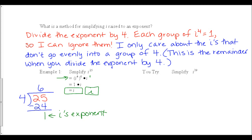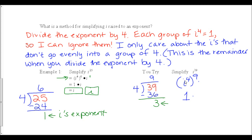Pause the video while you try to simplify i to the 39th. To solve it: I break 39 into groups of four — nine groups of i to the fourth, with a remainder of 3. That part with the full groups just equals 1. What really matters is the remainder of 3, giving me i to the third. I can't leave i to the third as an answer, so I simplify: i cubed is i squared times i, and i squared is negative 1, so my final answer is negative i.